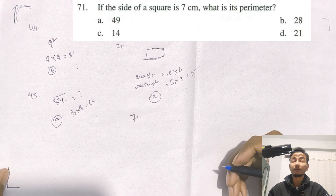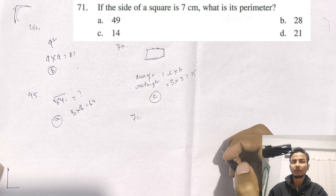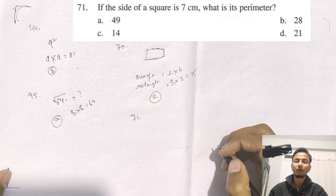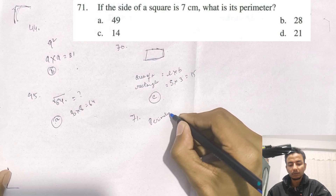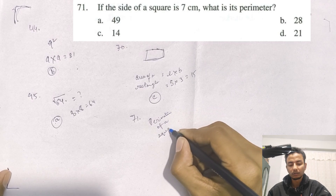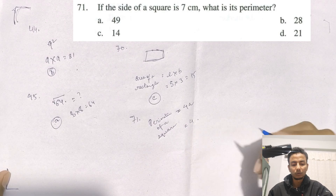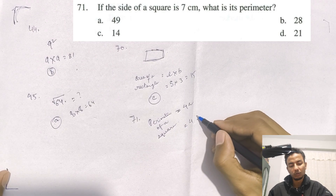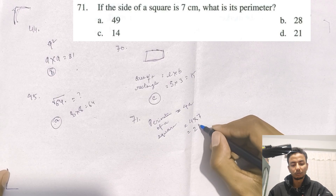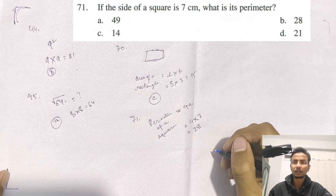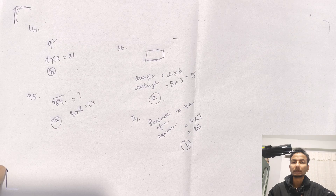Question number 71: If the side of a square is 7, what is its perimeter? The formula for the perimeter of a square is 4 times a (the side). So 4 times 7 equals 28. The correct answer is B.